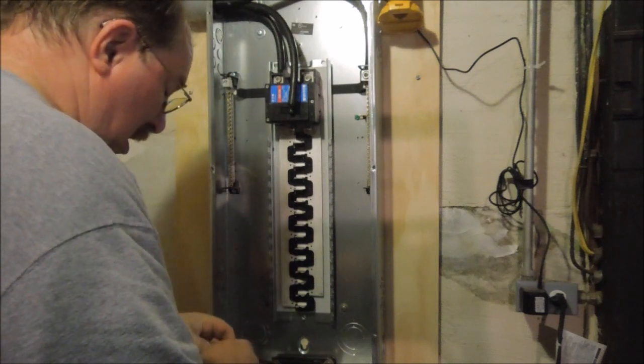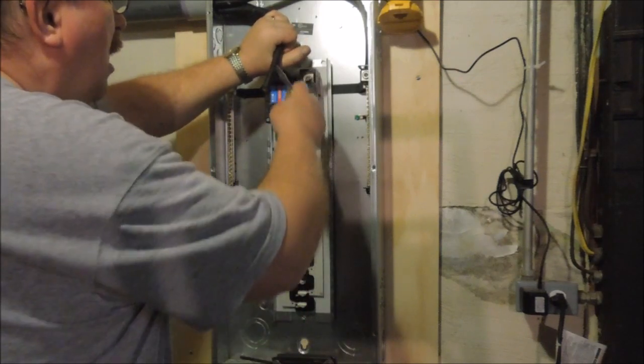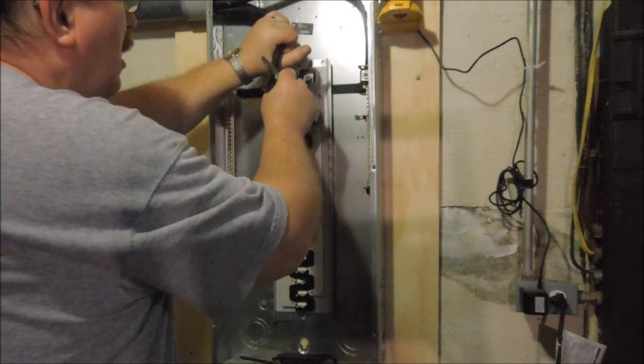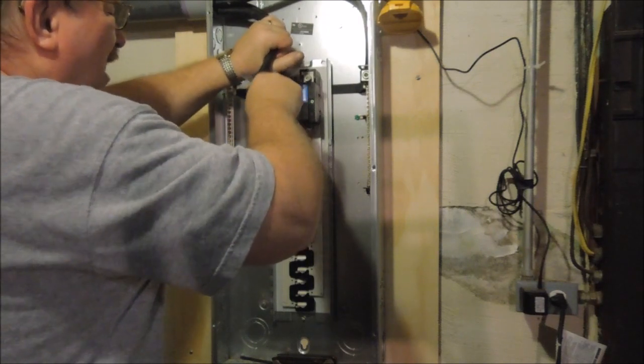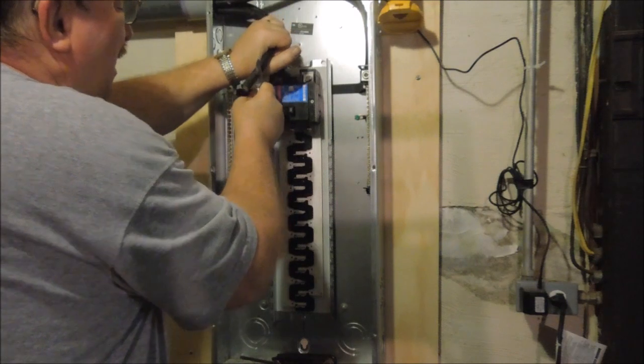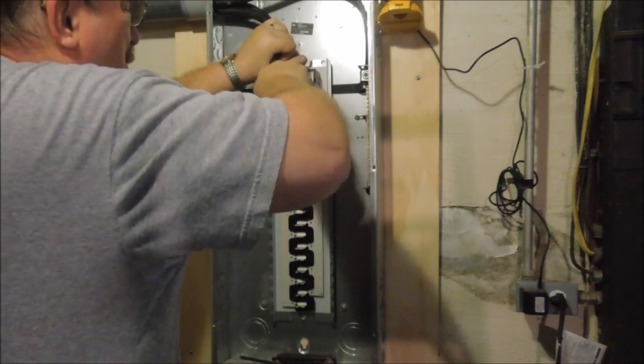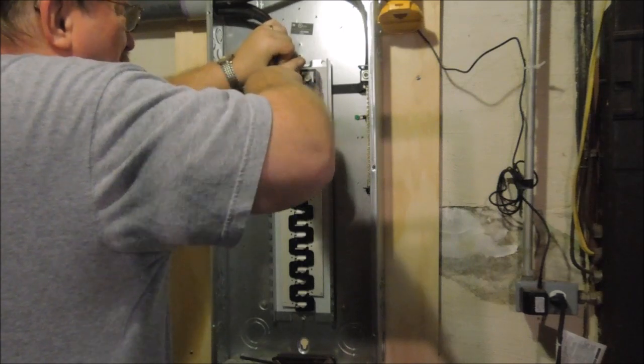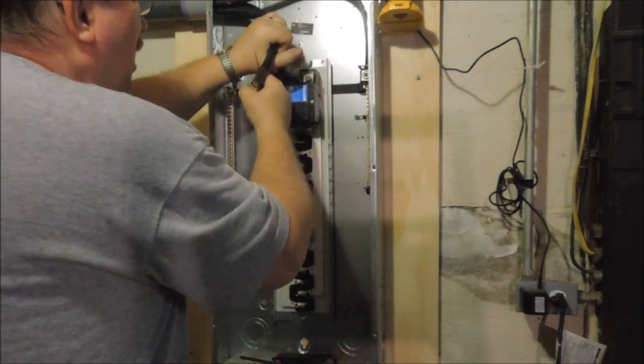You'd think that 2-inch conduit would have more than enough room to handle 3-out wire. But 3-out wire is so stiff that it doesn't want to flex and go around any corners.